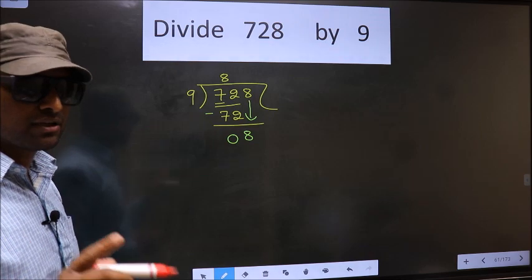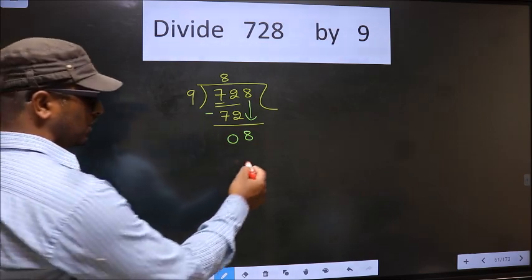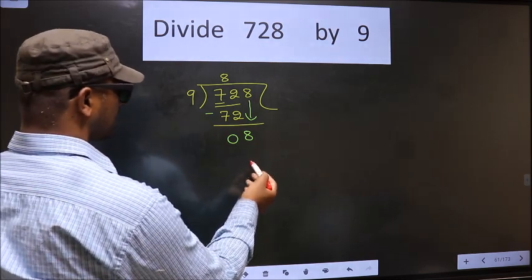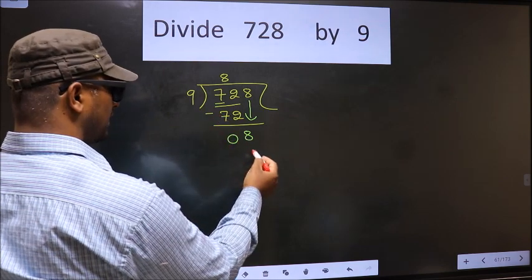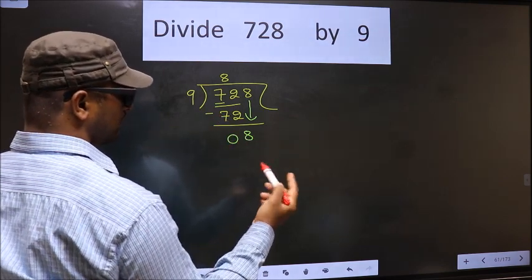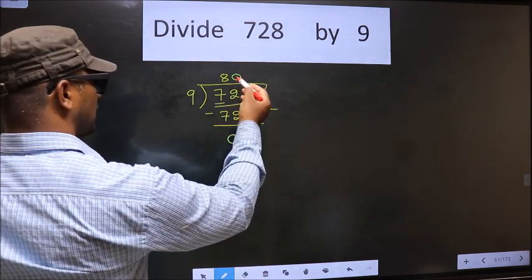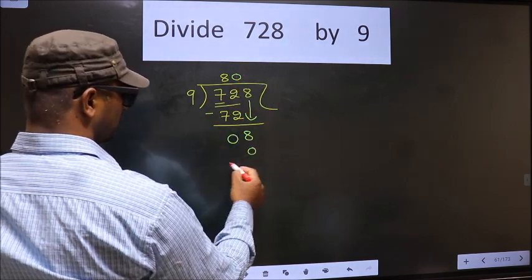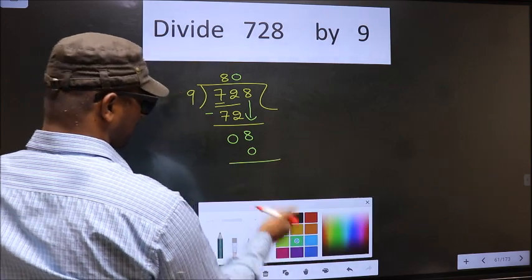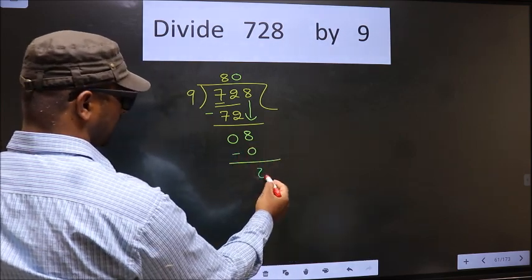Instead, what you should think of is what number should we write here? If we write 9 here, that is larger than 8. So, what we do is we take 0 here. So, 9 into 0 is 0. Now, you subtract. 8 minus 0 is 8.